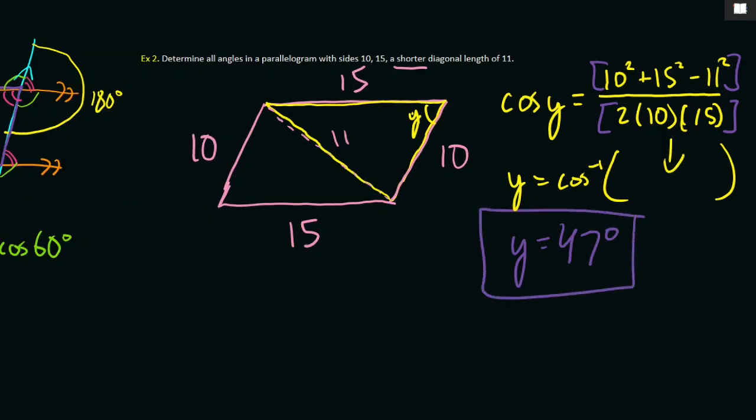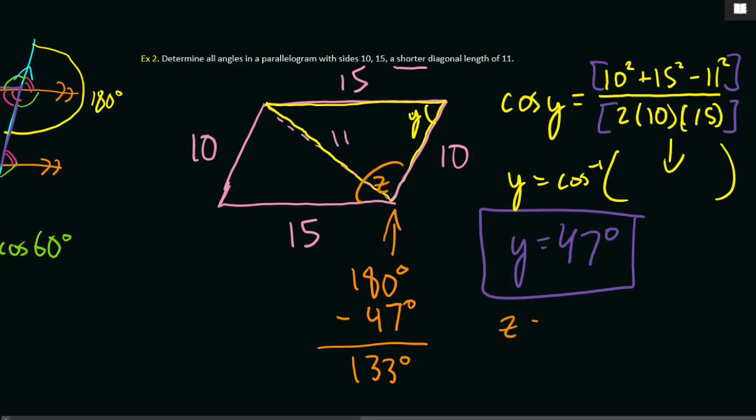And if y is 47 degrees, then our missing angle here is just going to be 180 degrees minus 47 degrees, which is 133 degrees. So our two angles in our triangle are 47 degrees and 133 degrees.